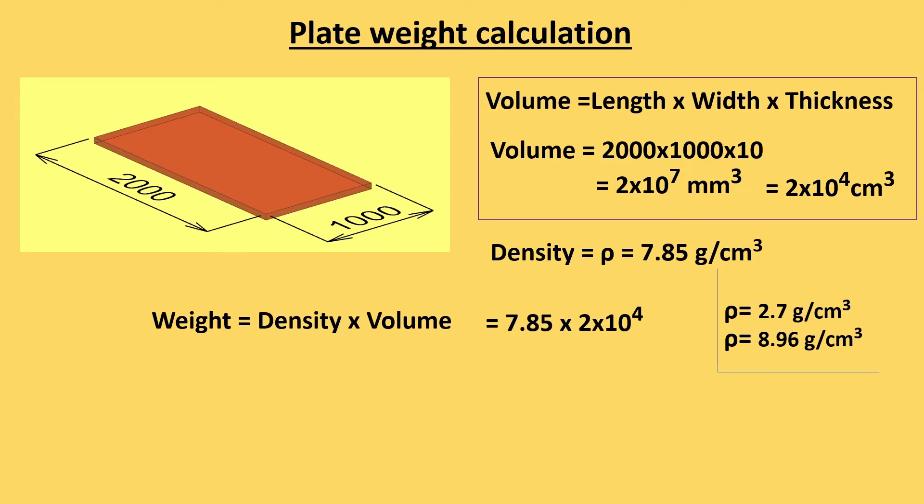So right now this is one MS plate. So multiplication of 7.85 into volume what we calculated give us weight of the plate 157 into 10 raised to power 6 gram and when we convert it in kg, the value comes 157.